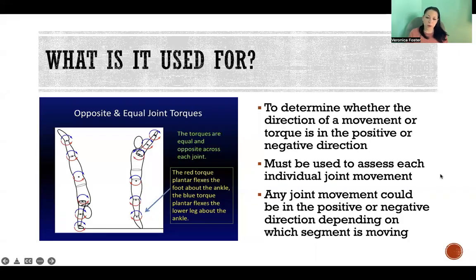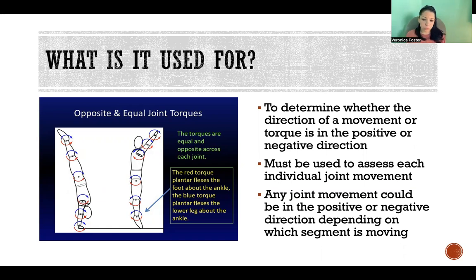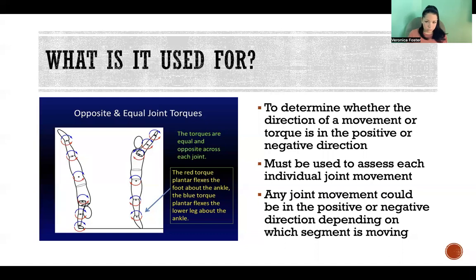So first off, what do we use the right-hand thumb rule for? It is how we determine whether a torque or a joint movement occurred in the positive or negative direction. We have to use this rule and apply it to each individual joint during a movement analysis, and we can't make any assumptions about it being in the positive or negative direction just based on what the motion is or what other joints are doing.